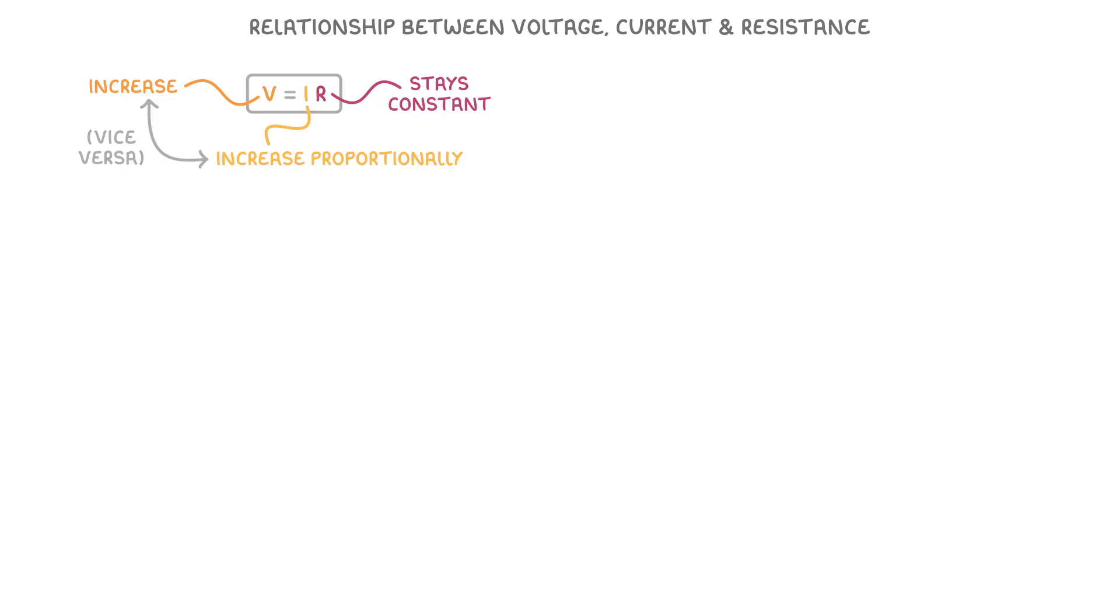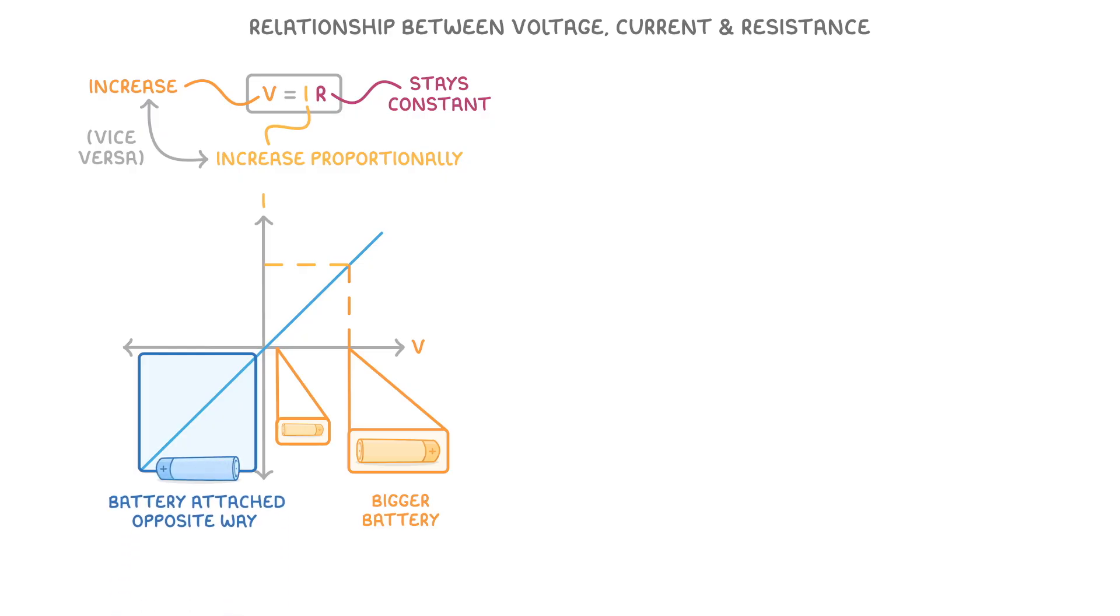And we can see this if we plot a graph of current against potential difference. As the potential difference increases, for example we use a bigger battery, the current produced in the circuit would also increase. And this negative part down here just shows the same thing except the battery is attached the opposite way around. So the voltage and current are effectively negative.